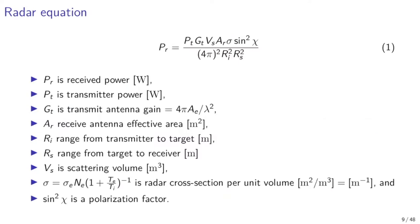The main objective of this lecture is to understand the different factors that determine the signal-to-noise power ratio of an incoherent scatter radar measurement. We'll start by deriving the equation for received radar power from a volume of ionospheric plasma, given in equation 1. The relevant parameters are: P_R, received power; P_T, transmitted radar power; G_T, transmitted antenna gain; A_R, receiver antenna effective area; R_I, range from transmitter to target; R_S, range from target to receiver; V_S, the scattering volume; sigma, the scattering cross-section per unit volume; and sin²χ, a polarization term arising from scattering in a bistatic radar geometry.